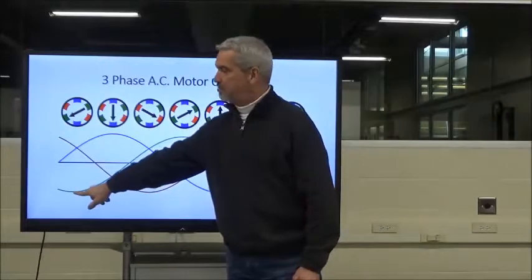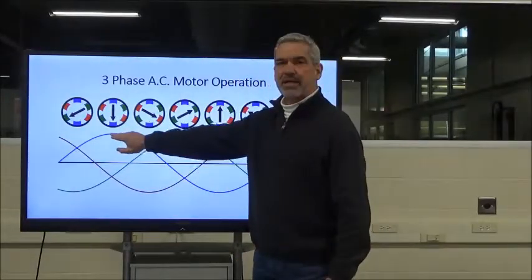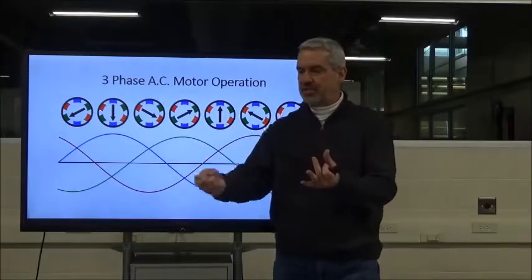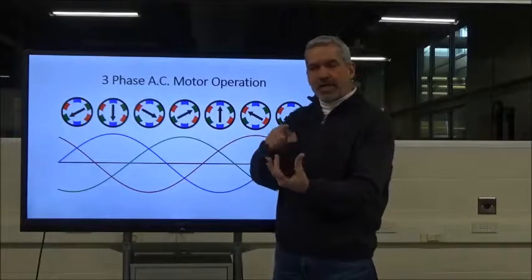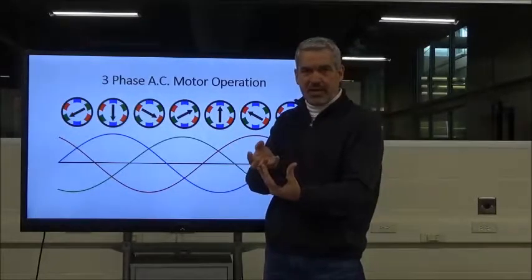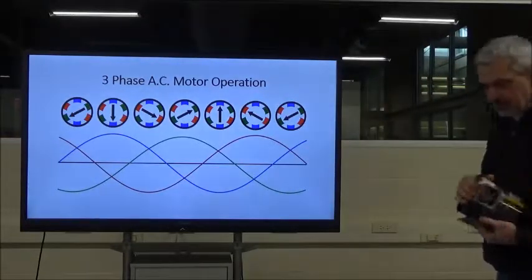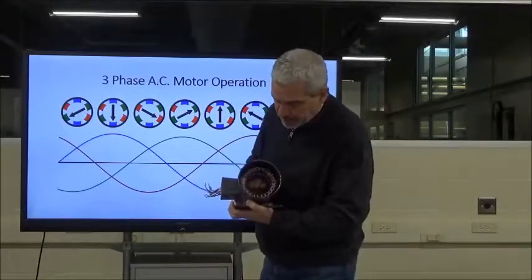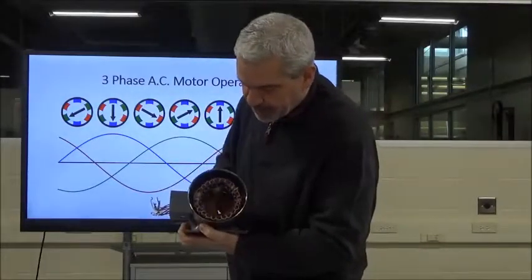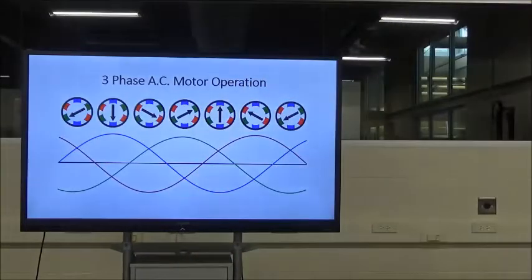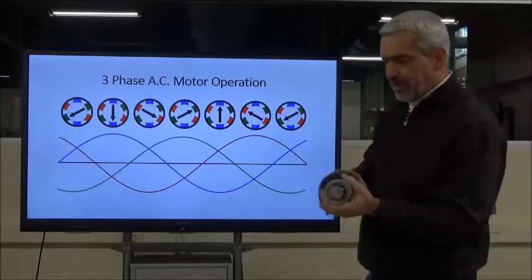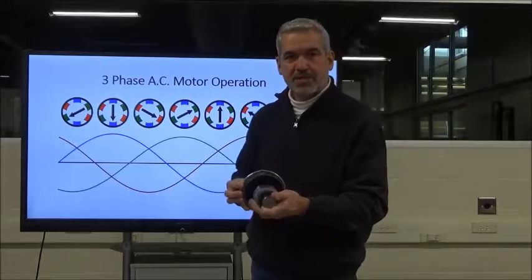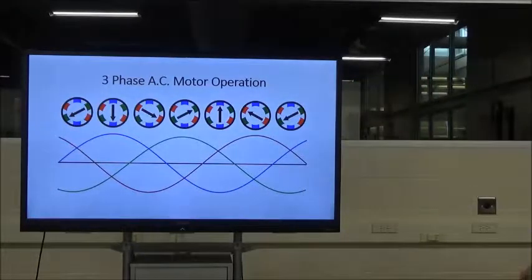The rotor sits on a set of bearings and spins freely. When you apply power, the rotating magnetic field goes around and around, and the rotor just chases that field. I've got a motor here from the lab to demonstrate this. We hook three-phase voltage to the windings, the magnetic field rotates, and the rotor chases it around and around. That's the simple operation of the three-phase motor.